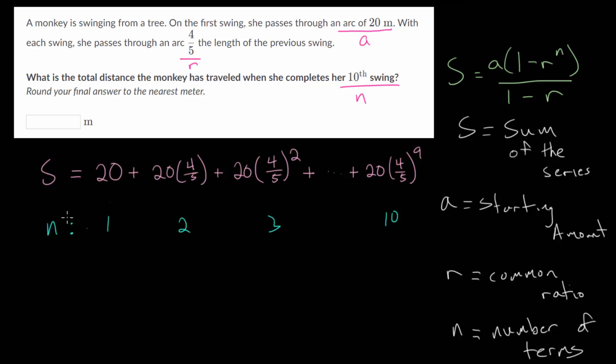So notice that for whatever swing the monkey is on, the exponent for 4 fifths is always 1 less than whatever the term value is. So here it's to the first power, and that's at term number 2.